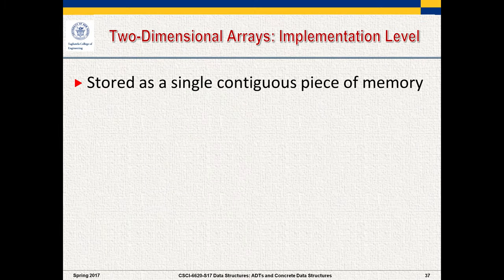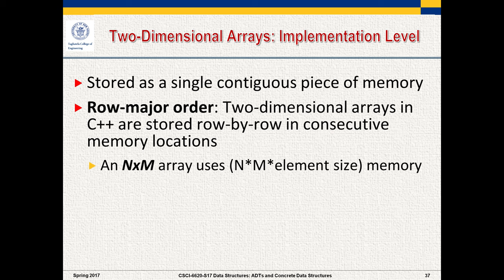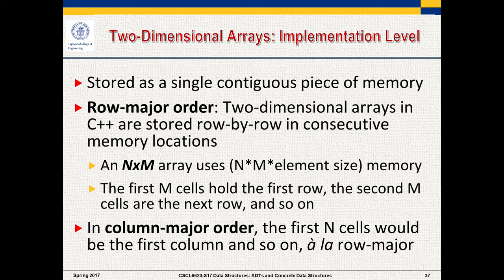At the implementation level, 2D arrays are usually stored as a single contiguous piece of memory. The usual scheme in C++ is row major order — stored row by row in consecutive memory locations. An n by m array uses n × m times the size of the elements in memory. The first m cells hold the first row, then the next m cells hold the second row, and so on. Some other languages use column major order, which is the same idea flipped the other direction.